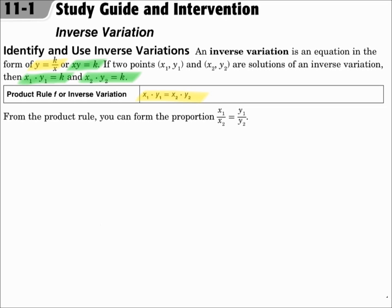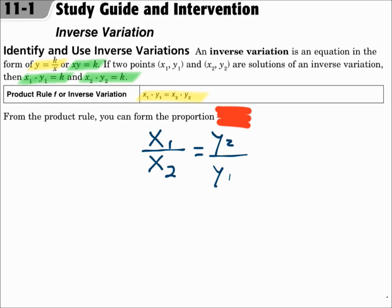Since x1y1 equals k and x2y2 equals k, and since they both equal k, then they both equal each other. You can also turn this into a proportion — note it is written incorrectly on your sheet, so rewrite it: x1 over x2 equals y2 over y1.